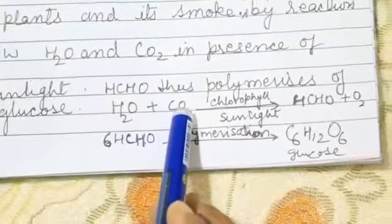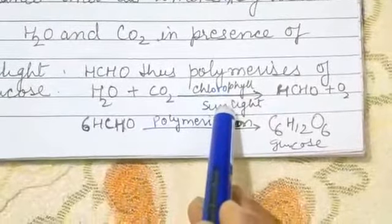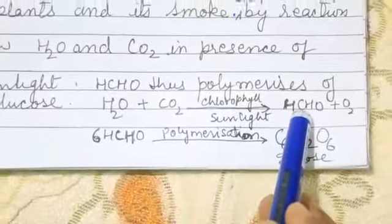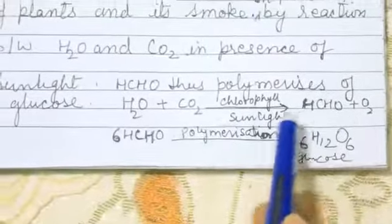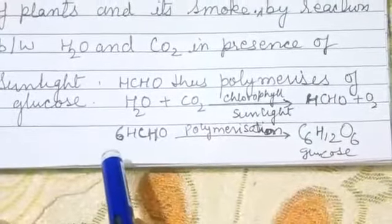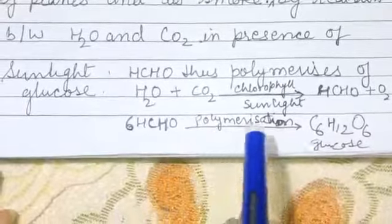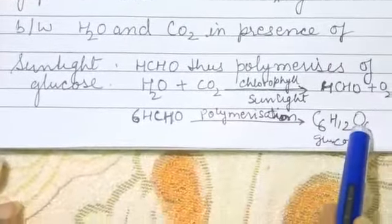When water molecules react with CO2 in presence of chlorophyll and sunlight, it forms first formaldehyde in the presence of oxygen. This formaldehyde when goes through polymerization process then it forms glucose.